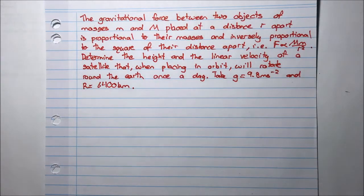Determine the height and the linear velocity of a satellite that, when placed in orbit, will rotate around the earth once a day. Take g equal to 9.8 meters per second squared and r, which is the radius of the earth, as 6,400 kilometers.